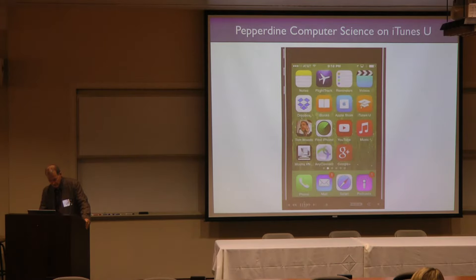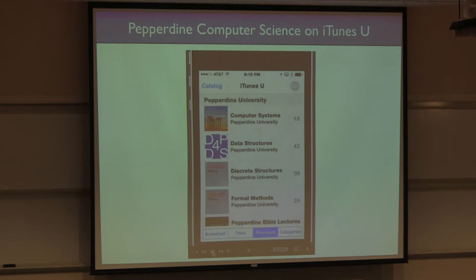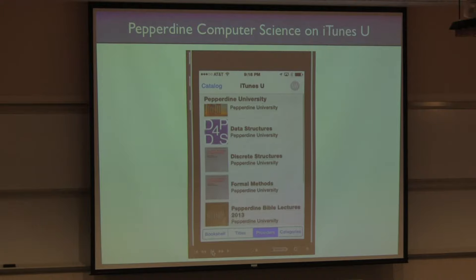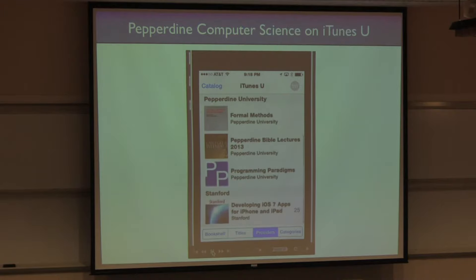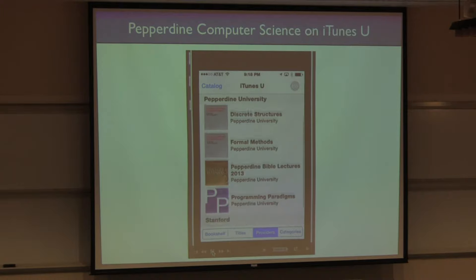So here is a little video of an iPhone. iTunes U is this app right here. You tap the app and what comes up is the catalog of courses that the student subscribes to. Here's Computer Systems, Data Structures, Discrete, Formal Methods. The user can scroll down. There's a Pepperdine Bible lecture, Programming Paradigms — that's the one we did. And this last one at the bottom, the Stanford one, that's the one I modeled my iTunes U organization after.